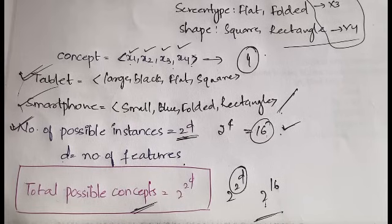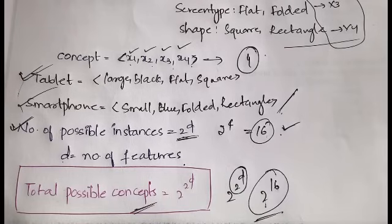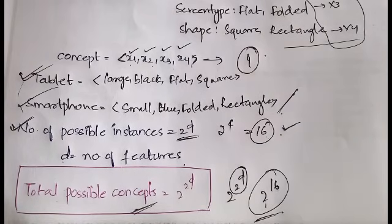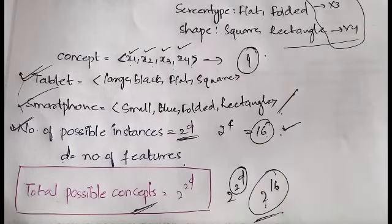Why are we finding all of these? From these 2^16 concepts, you are not going to discuss all of them or teach your machine about all of them. You will be choosing only some concepts from those 2^16 — specifically, only the concepts which are consistent all the time. Those are the concepts that will be considered.